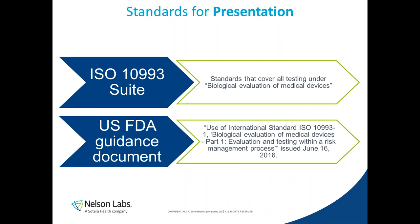The other document on this slide is the US FDA guidance document, released in 2016. It's basically how the FDA interprets 10993. The 10993 is kind of the law — especially in Europe, if you're dealing with a notified body, they follow what 10993 says directly as law. The FDA uses it more as guidelines, adding their own interpretation onto 10993.